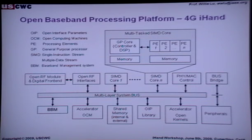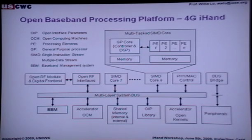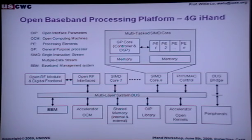Inside the open baseband processing sublayer, OWA maps different wireless standards into different parameters. This has already been published in IEEE Communications Magazine and IEEE journal. Basically, we have two accelerators: one is the OCM — Open Computing Machine — which handles wireless algorithms like modulation coding and equalization; the other accelerator handles different protocols and algorithms.